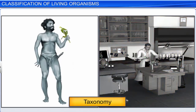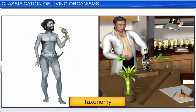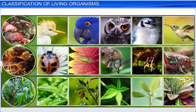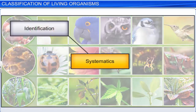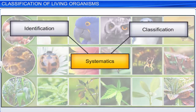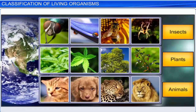Taxonomy isn't new to humans. For ages, humans have been interested in knowing about different types of organisms and the relationships among them. This branch of study is known as systematics, which means systematic arrangement of organisms. Today, systematics also includes the identification, classification, nomenclature, as well as evolutionary relationships among organisms. Therefore, in this diverse world, it is important to classify and name living organisms for their easy identification and study.